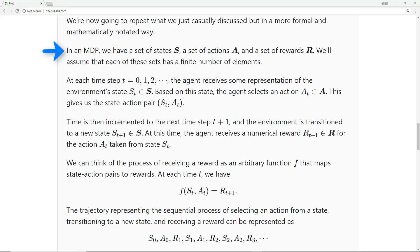In an MDP, we have a set of states, S, a set of actions, A, and a set of rewards, R. We'll assume that each of these sets has a finite number of elements. At each time step t, the agent receives some representation of the environment's state, s_t.